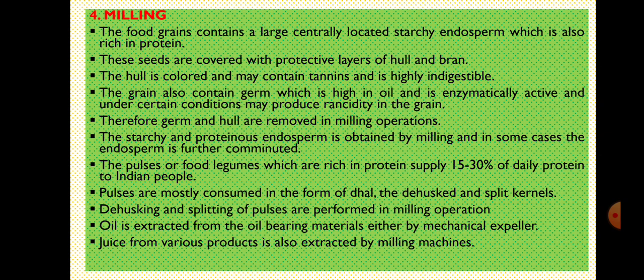Pulses or food legumes, which are rich in protein, supply 15 to 30% of daily protein to Indian people. Pulses are mostly consumed in the form of dhal, that is the de-husked and split kernels. De-husking and splitting of pulses are performed in milling operations. Oil is also extracted from oil-bearing materials either by mechanical expellers. Juice from various products is also extracted by milling machines. Thus, size reduction or milling of cereals, pulses, and oil seeds is done under this milling unit operation.